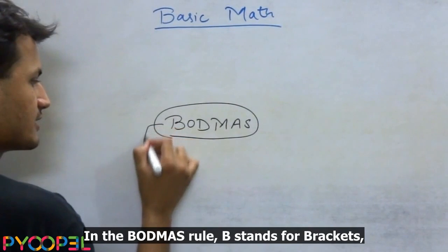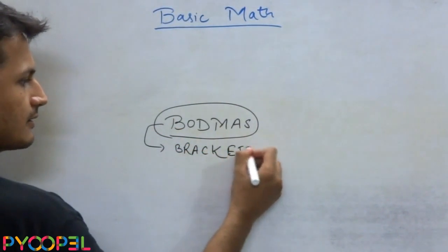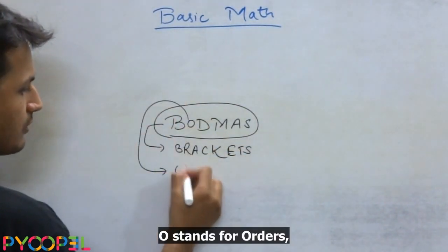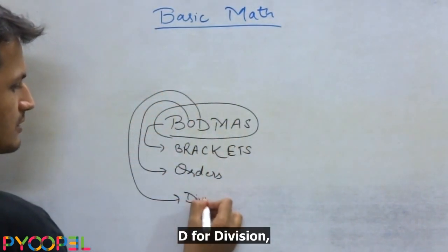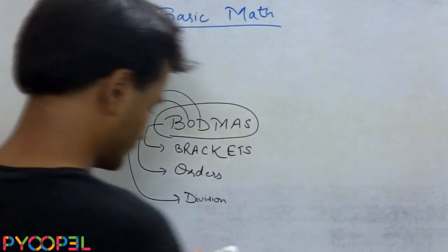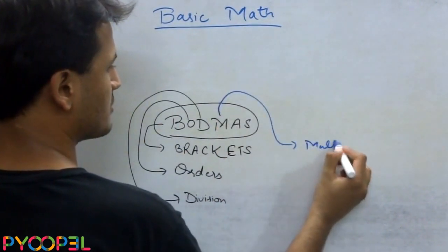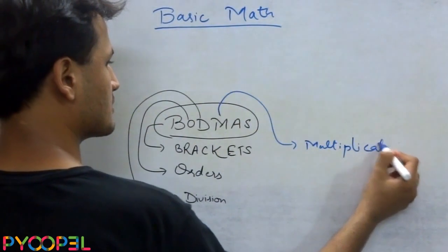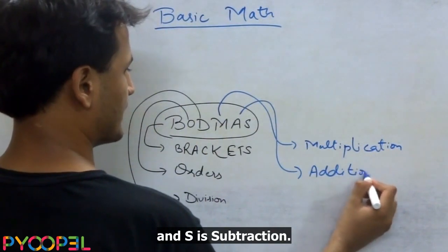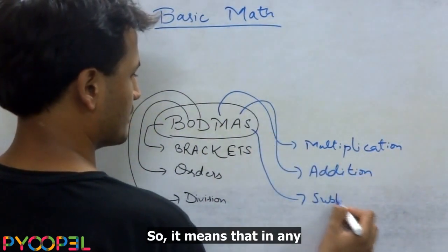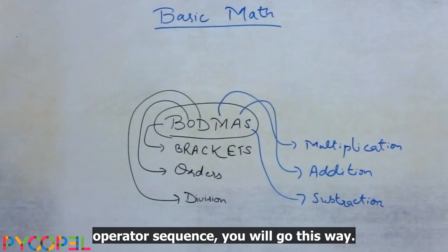The BODMAS rule states B stands for brackets, O stands for orders, D for division, M for multiplication, A is addition and S is subtraction. So it means that in any operator sequence, you will go this way.